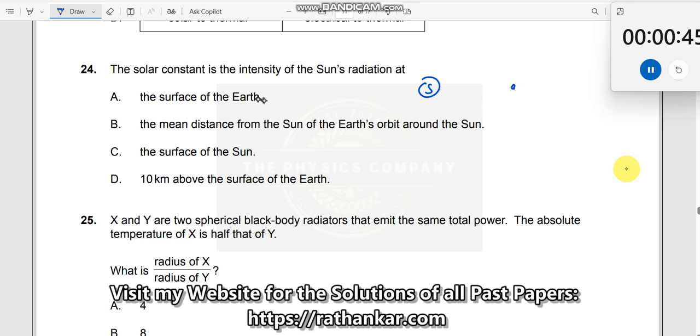So what we do is, you can say surface of the earth or the mean distance from the sun of the earth's orbit around the sun. What is this now? This is nothing but mean distance from the sun of the earth's orbit. Okay, this is the earth's orbit. So therefore, you are going to find out what is the intensity at the earth's orbit around the sun.